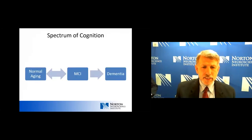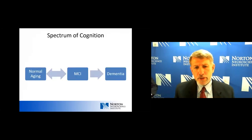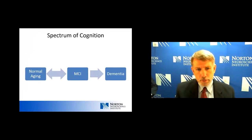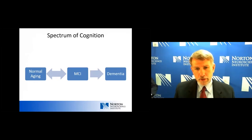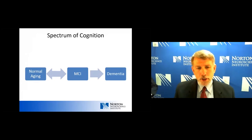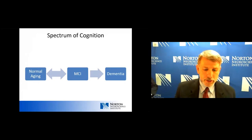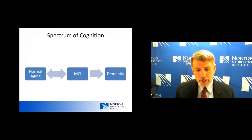This is a graphical representation of that trajectory. Starting with normal aging, we may progress to mild cognitive impairment. Once at mild cognitive impairment, we may stay there, revert back to normal aging, or progress on to dementia.